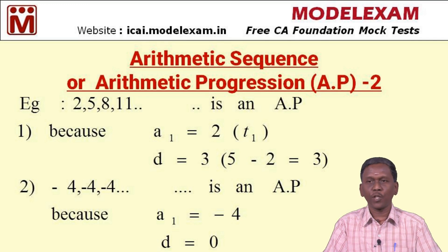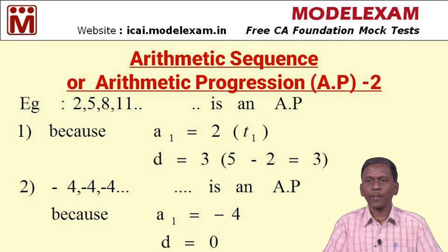The common difference is obtained by subtracting the first term from the second term: 5−2=3. Another example: −4, −4, −4 is also an AP, where a1=−4 and the common difference d=0.